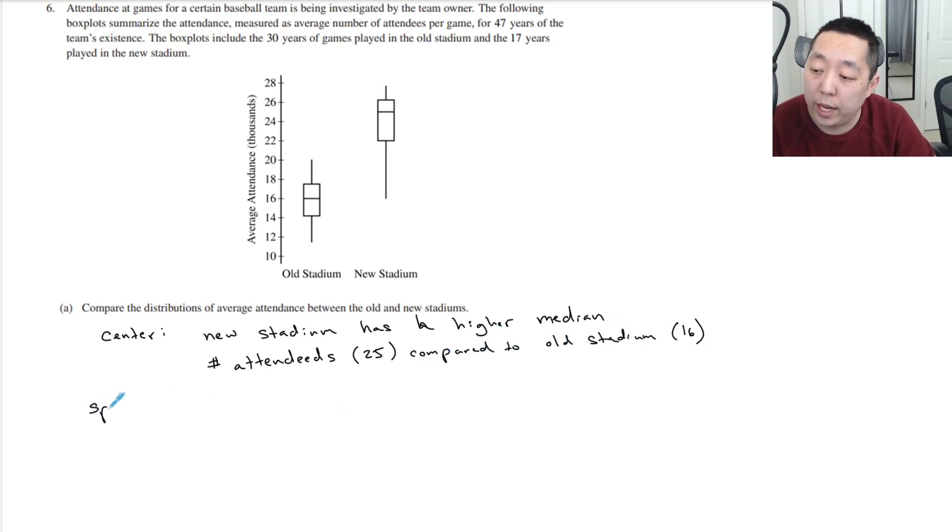Let's talk about spread. The easiest thing to look at for spread - you can either talk about the IQR or you can talk about the range, just something about the spread of the data. I'm going to talk about the IQR, which is the Q3 minus the Q1. This has about a spread of 4 and this is a spread of about 4. They have a similar spread, similar IQR of about 4.